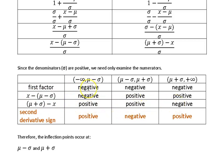Therefore, these factors multiply together to be positive, negative, positive, and we see that it does change sign as it crosses those hypercritical values. Therefore, the inflection points do occur at mu minus sigma and mu plus sigma.